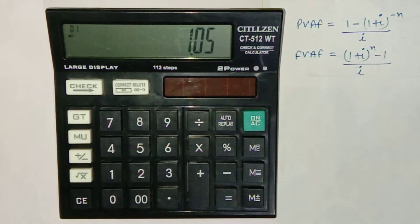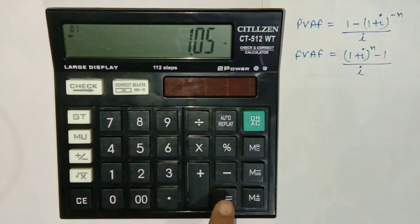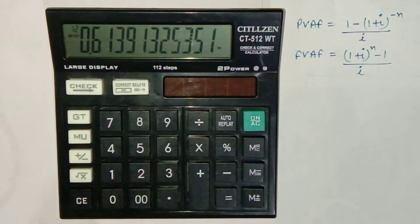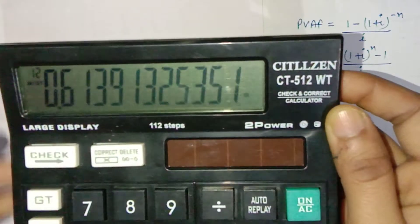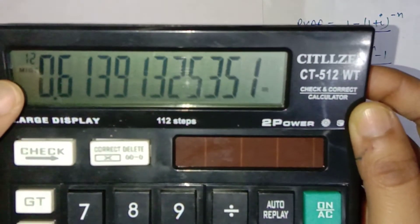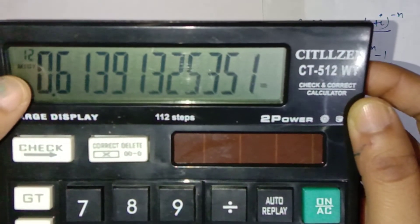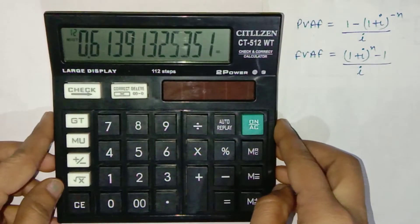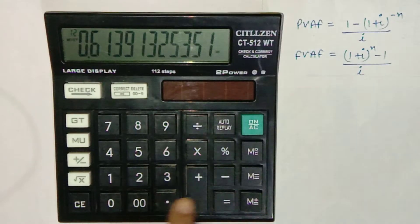Now press the division button and then the equals sign repeatedly until we get n plus 2 on the left side of the calculator. Since n in our case is 10, we should get 10 plus 2, that is 12, on the left side of the calculator. So it is 12.